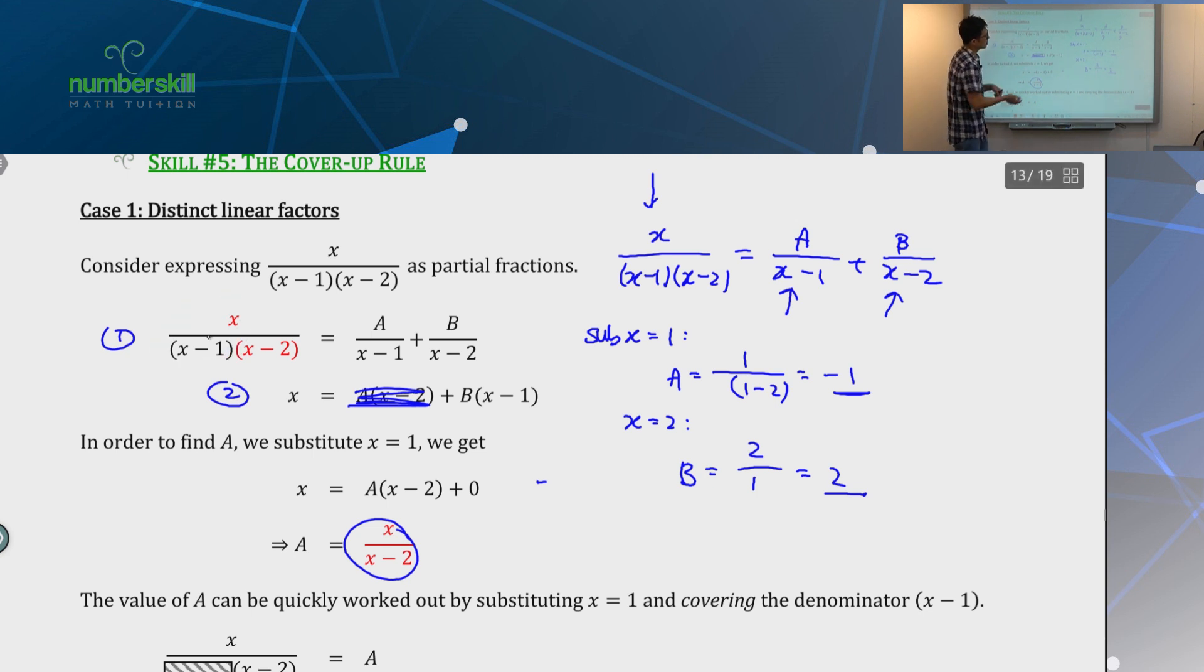So, when you are trying to find B, you try to make A disappear. How to make A disappear? Well, you substitute x equal to 2. So, when you substitute x equal to 2, the A will disappear, and your B actually look like this. So, once you understand this, then this mysterious part of it, you go like, hey, actually, you are doing the same thing as before, it's just that you don't show the workings in between.